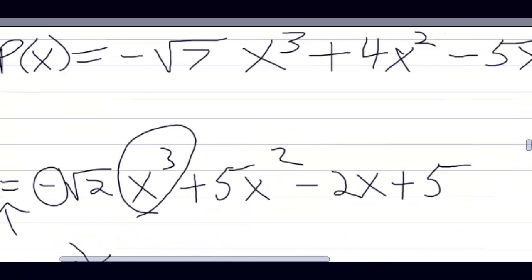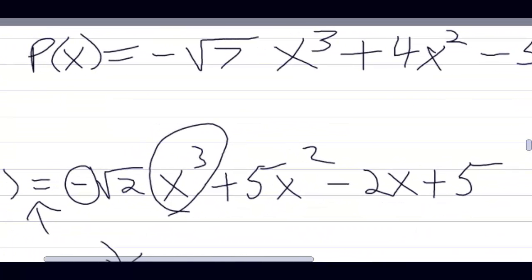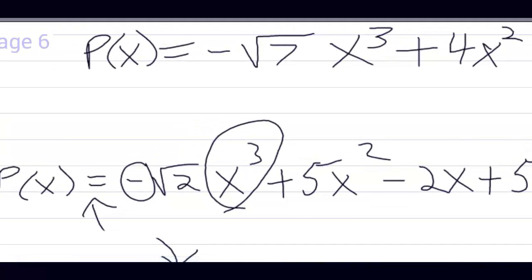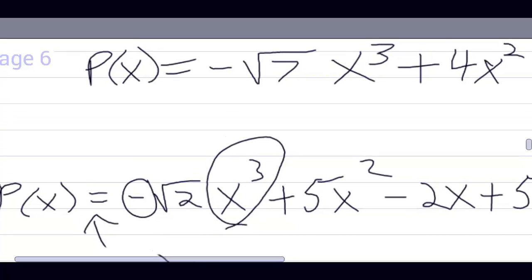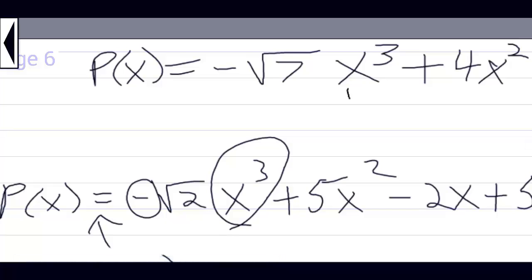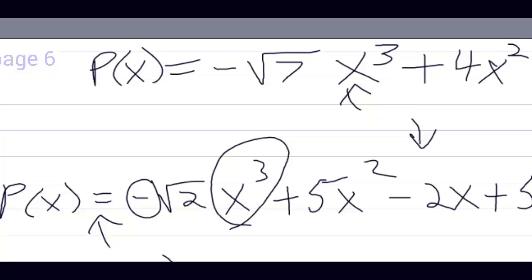Here we have a problem that's going to have exactly the same end behavior as -√2 times x³. The end behavior is the same as y = -x³ with the middle erased, because your function will be doing something else in the middle — that part is specific to the graph. Way out at the ends, this is going to go up forever on the left and down forever on the right.